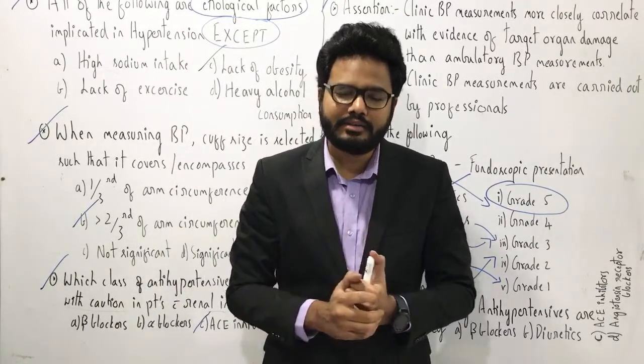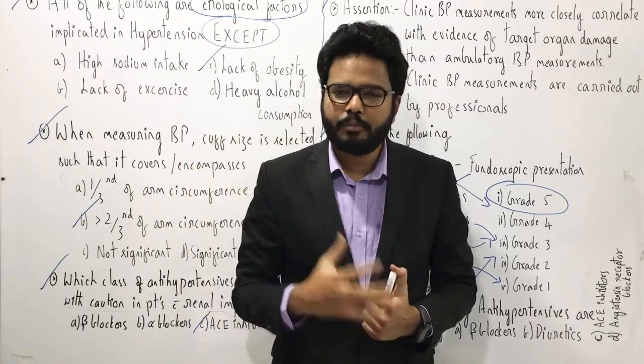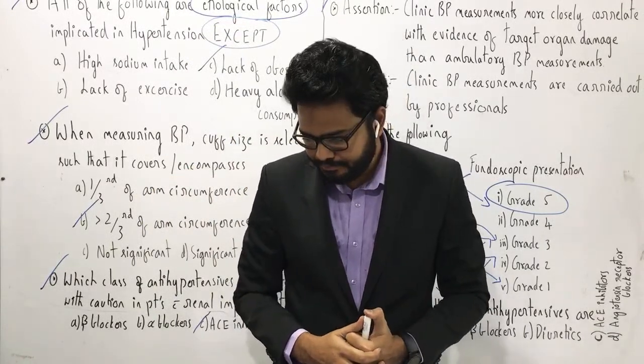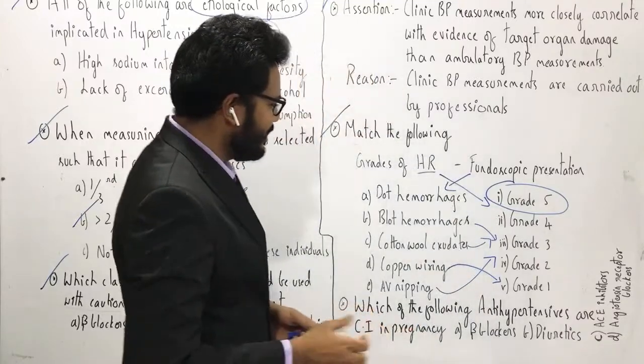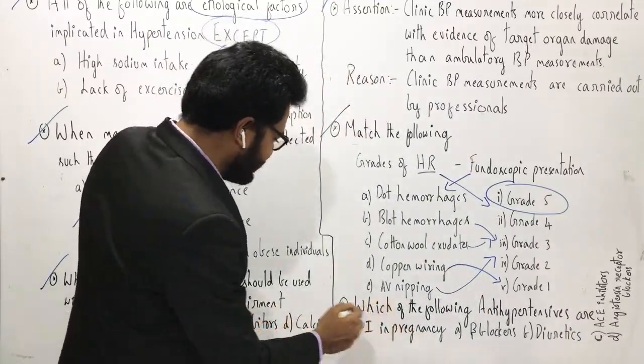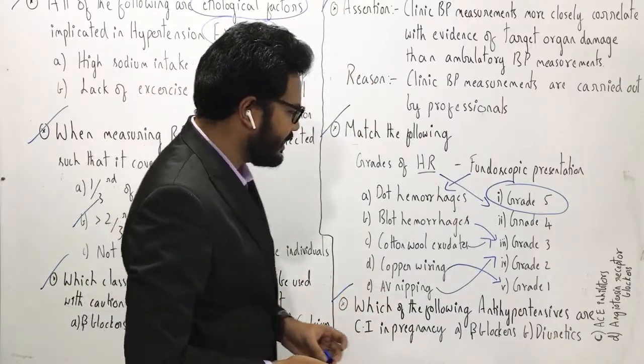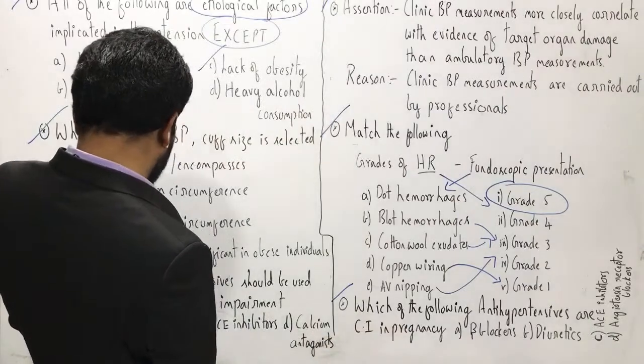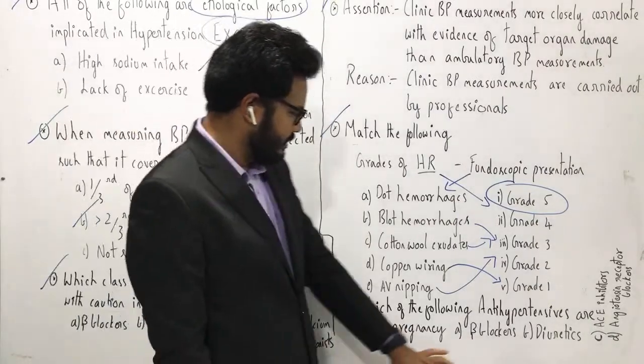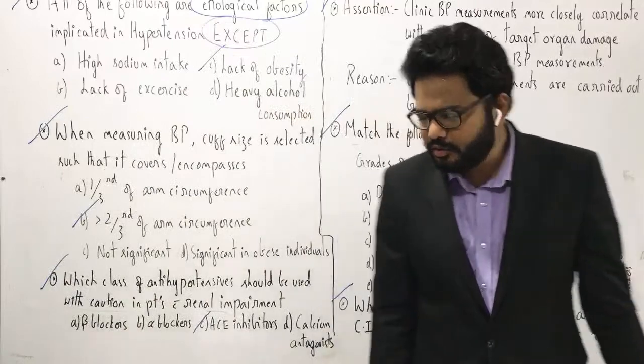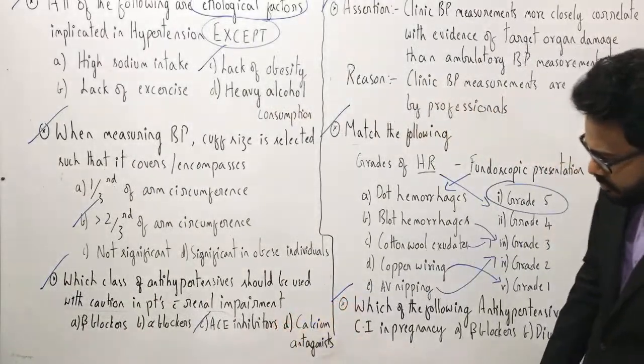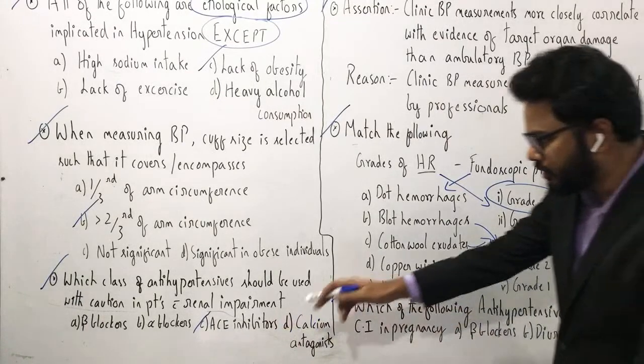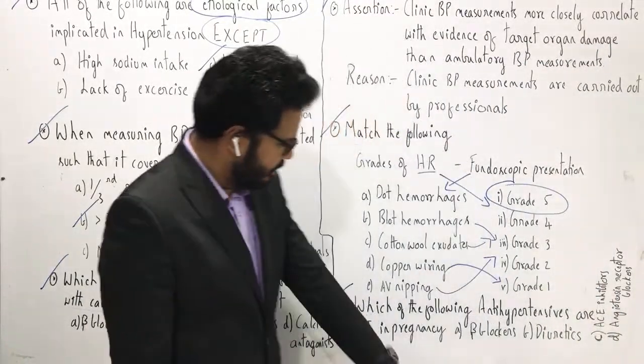Dot hemorrhages, diabetic retinopathy. Blot hemorrhages, hypertensive retinopathy. Now, let's move on to the final question. Which of the following antihypertensives are contraindicated in pregnancy?